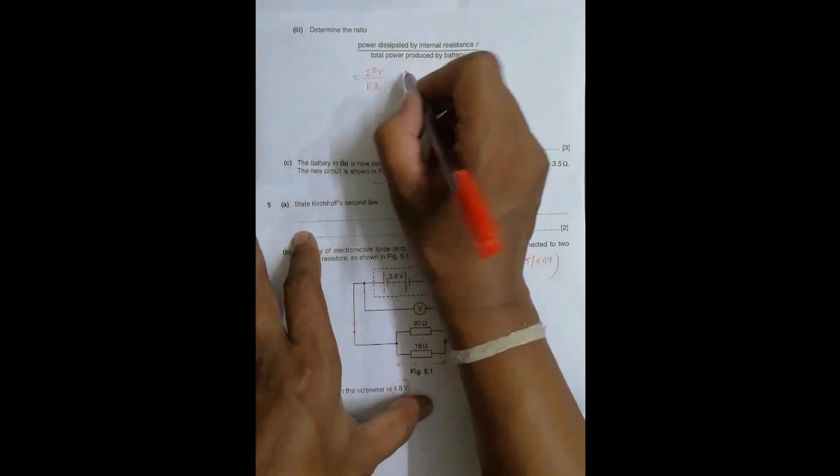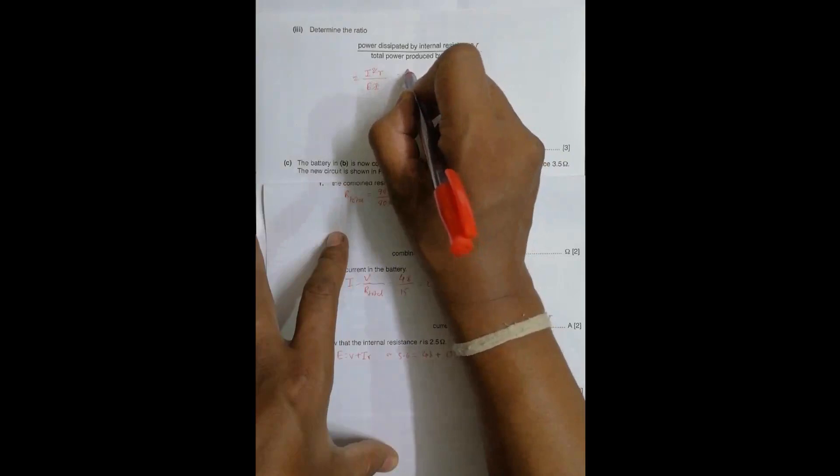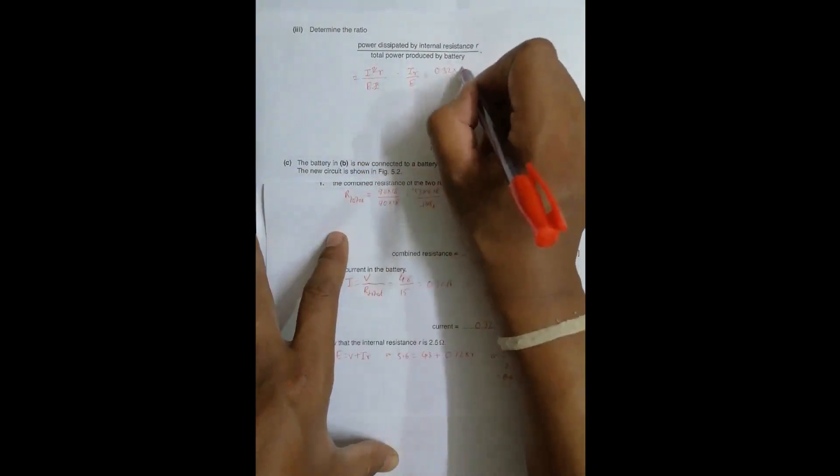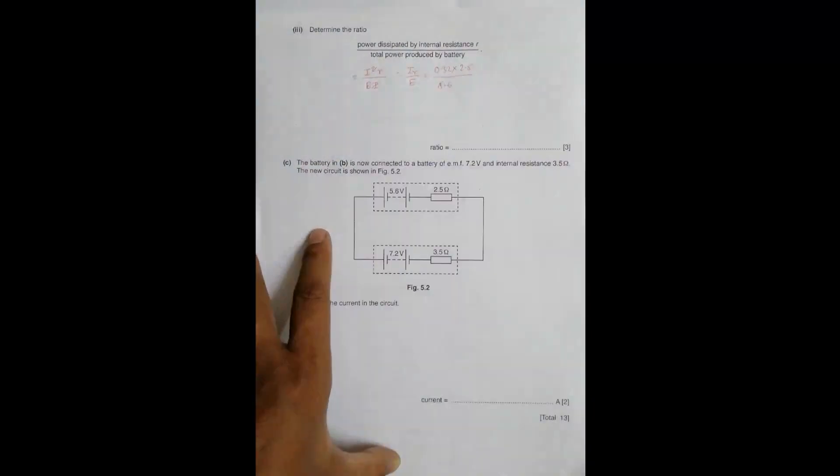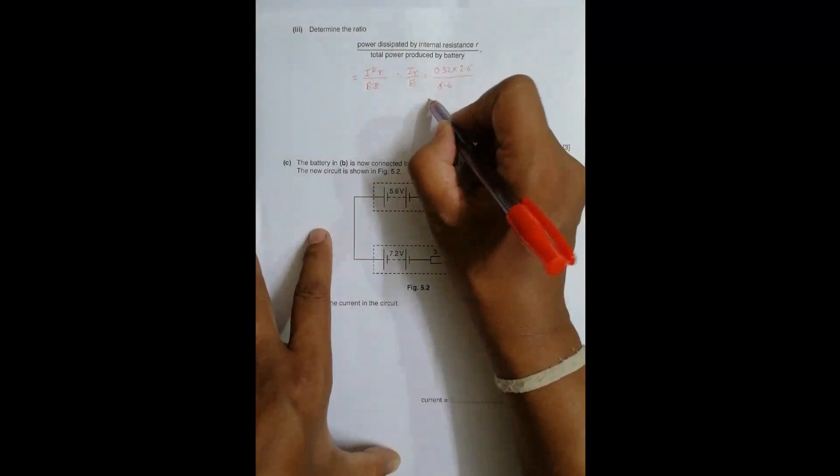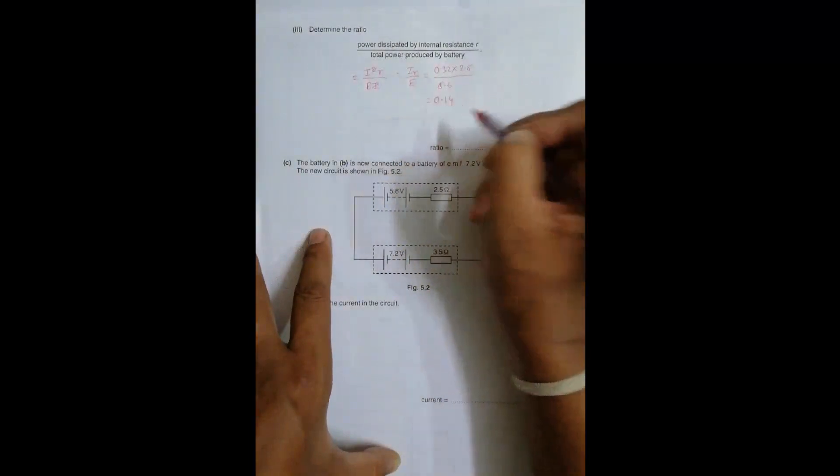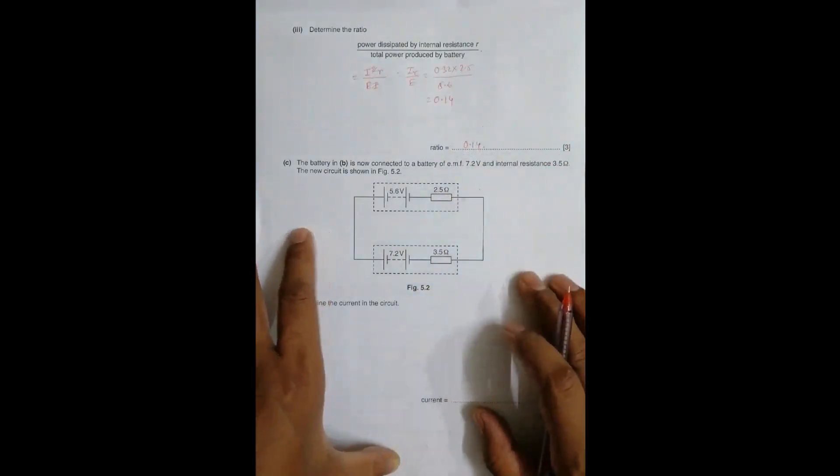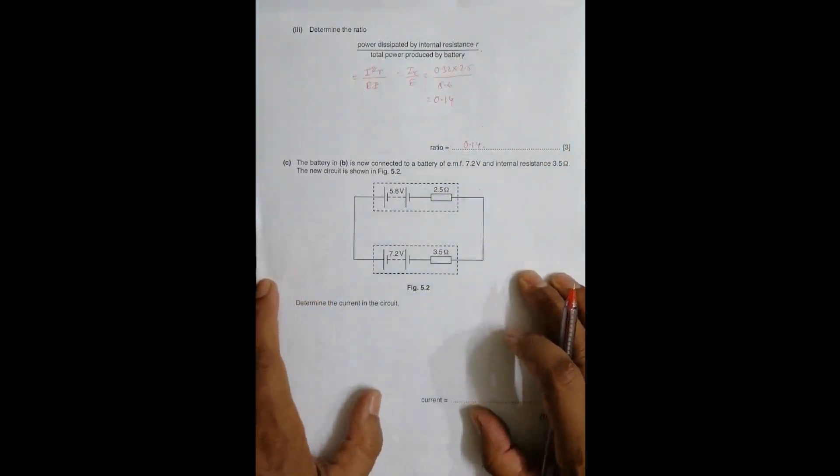So the ratio is I times r divided by E. That equals 0.32 times 0.32 times 2.5, where r is 2.5 and the EMF is 5.6. The ratio equals 0.14.